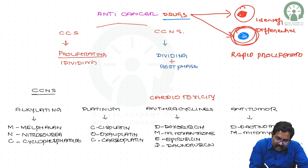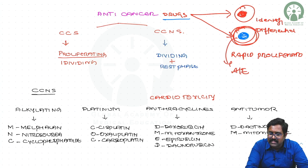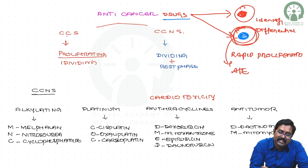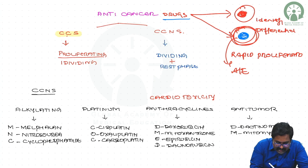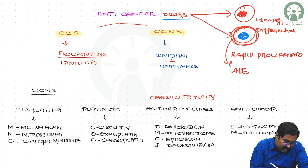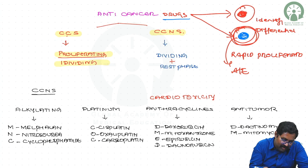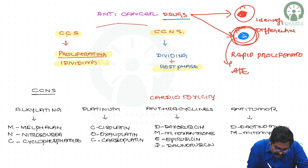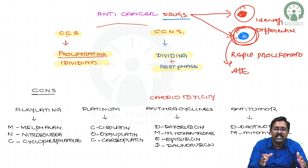Anti-cancer drugs can be classified as cell cycle specific or cell cycle nonspecific. In the cell cycle specific category, these drugs concentrate only on the proliferating or dividing cells. In the cell cycle nonspecific category, they also act on the resting phase cells in addition to the dividing cells. So cell cycle nonspecific drugs act on both rapidly dividing cells as well as resting phase cells.